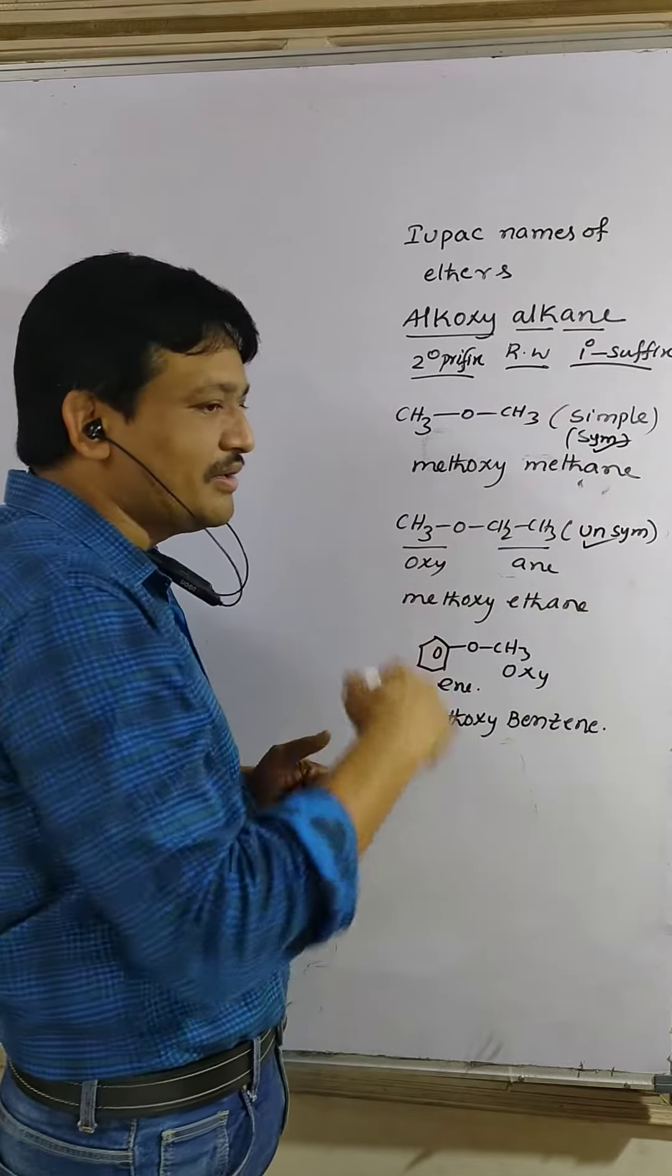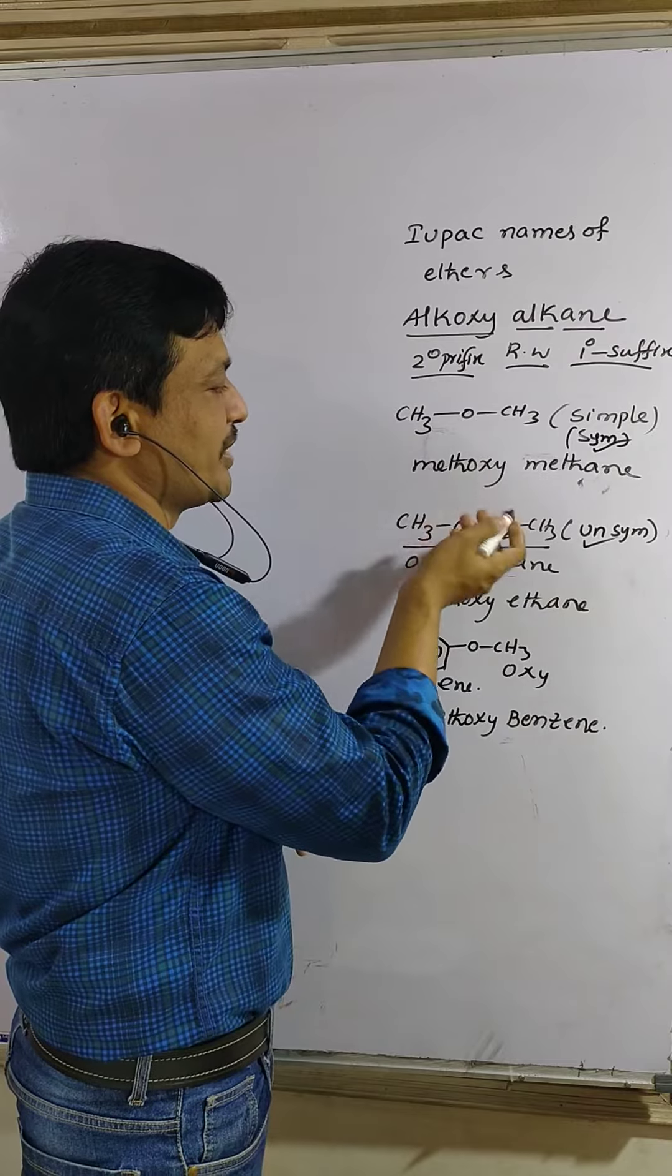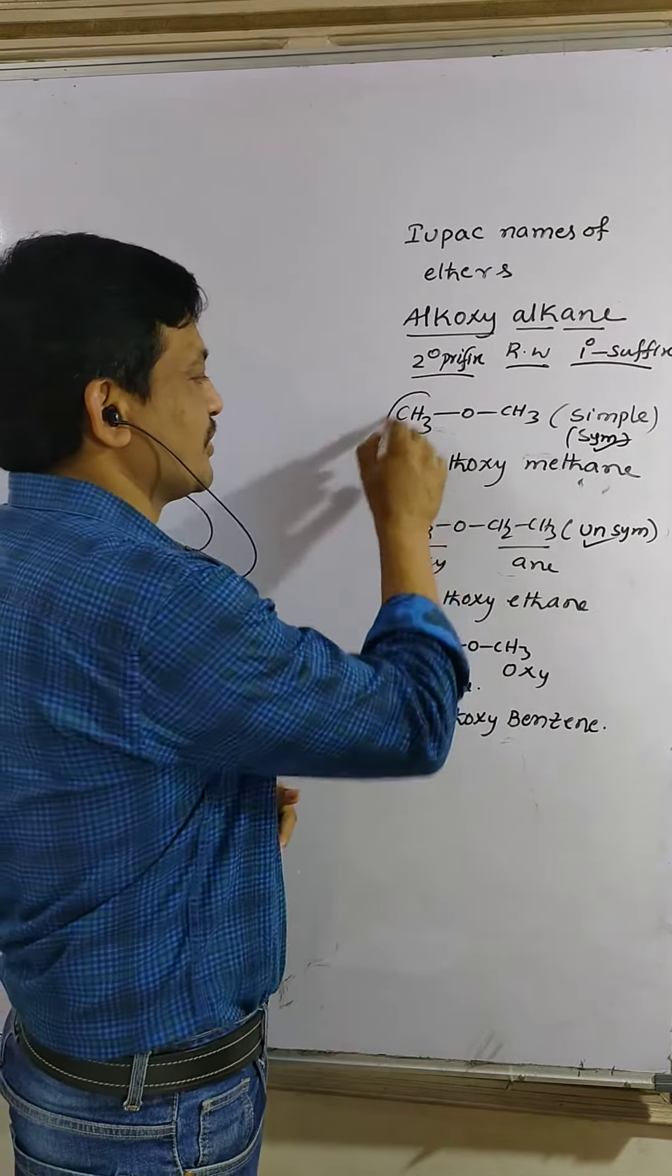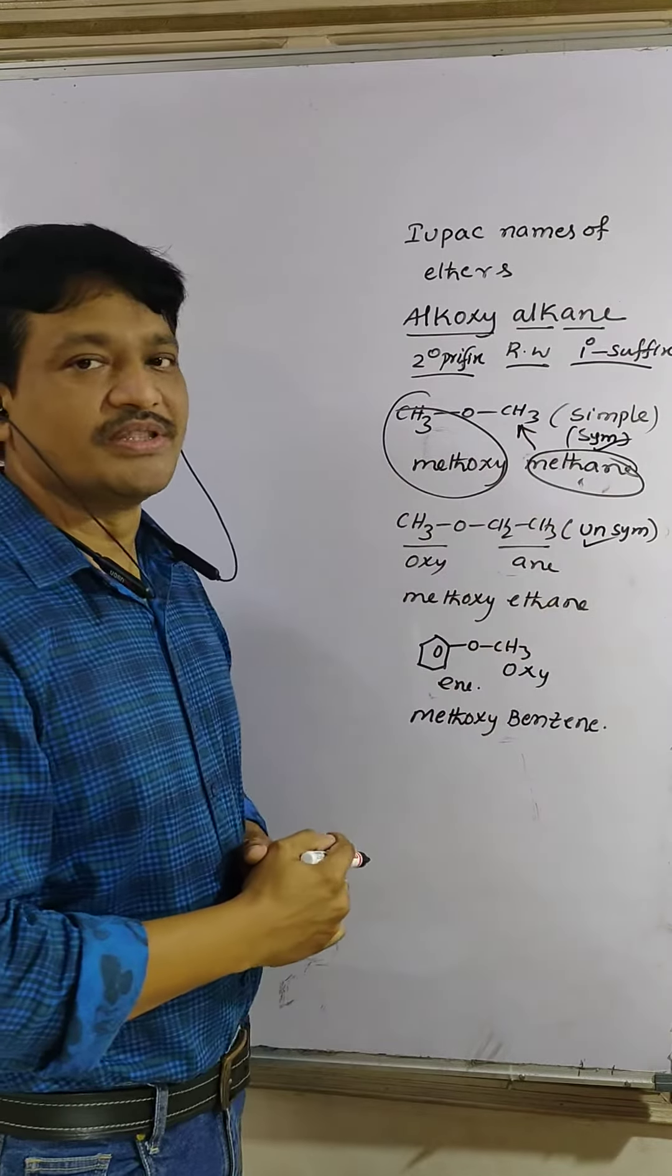Unequal, unsymmetrical or mixed ethers. So both sides equal, don't worry about which side is alkoxy, which side is alkane. So methoxy methane. Methoxy methane.